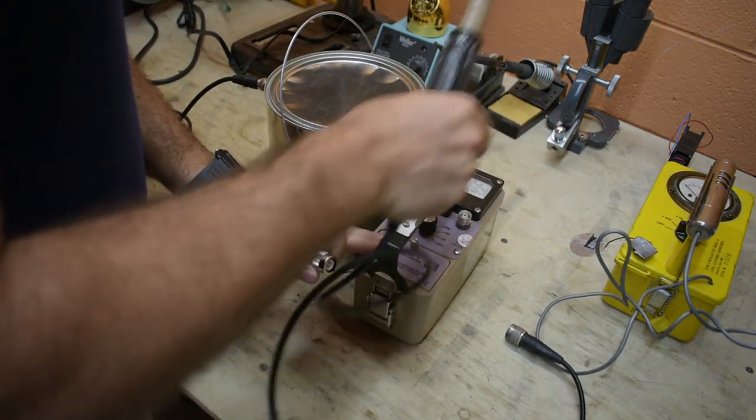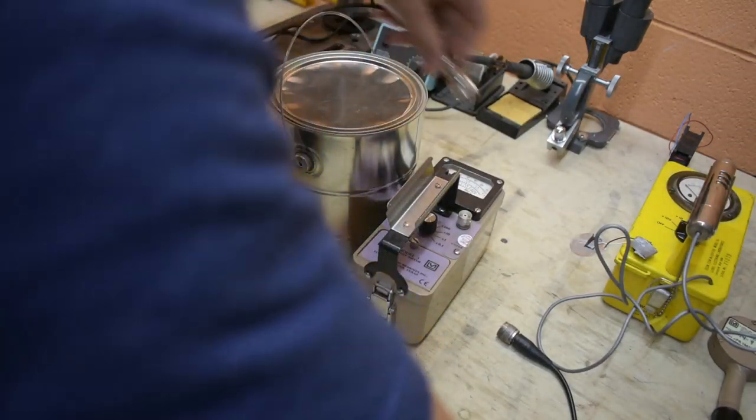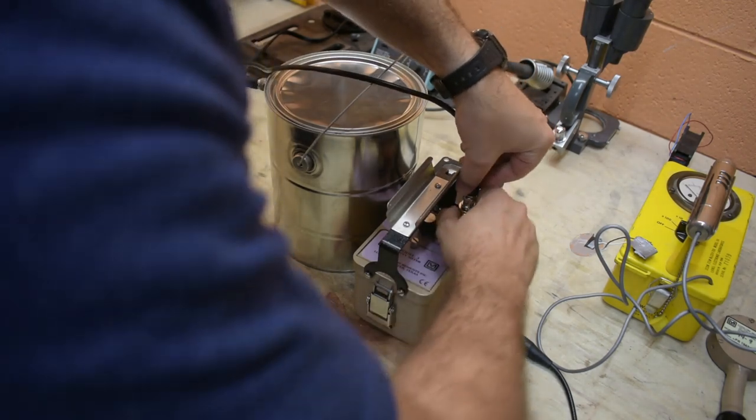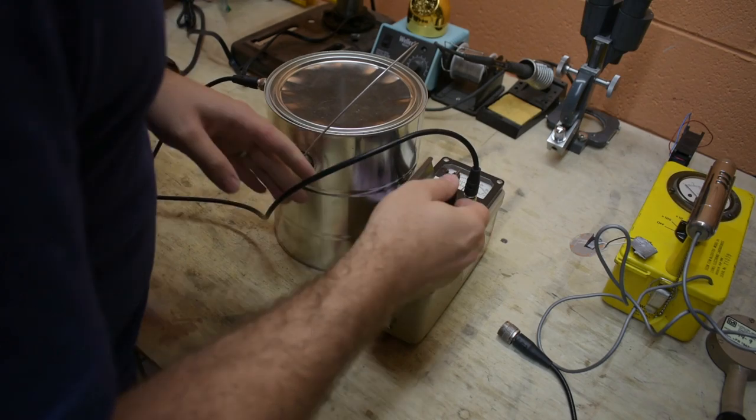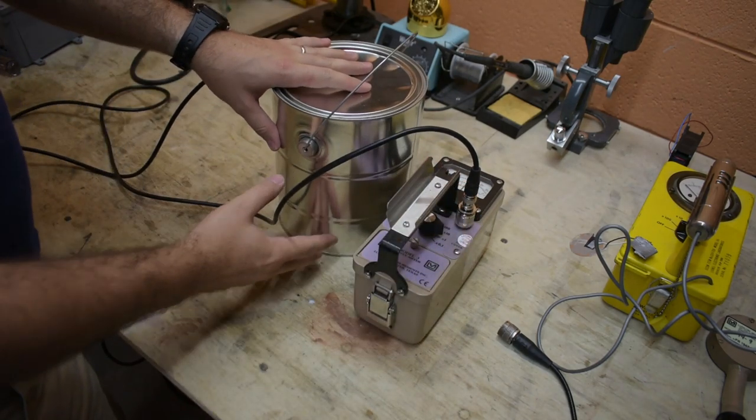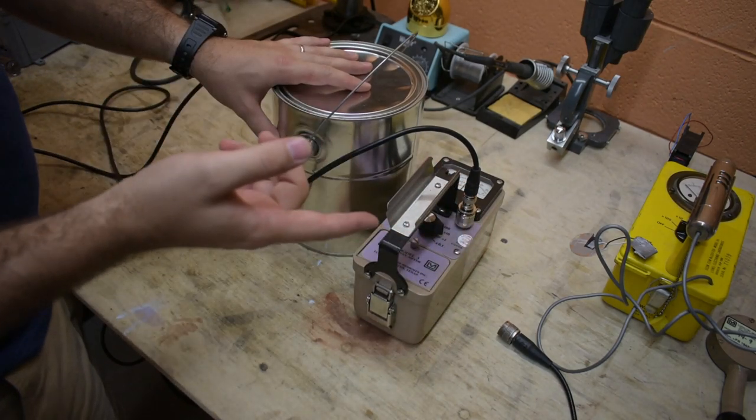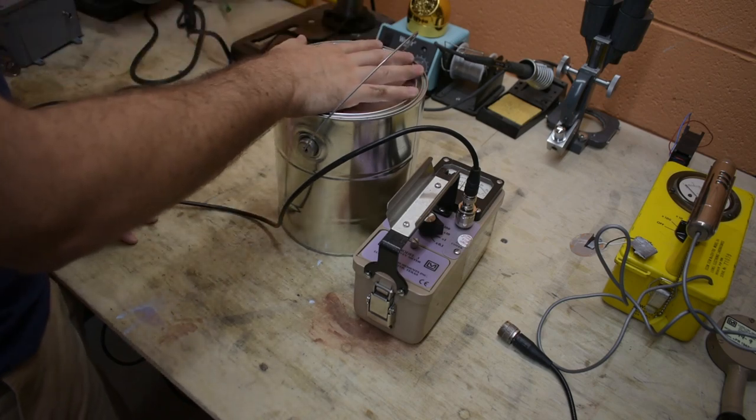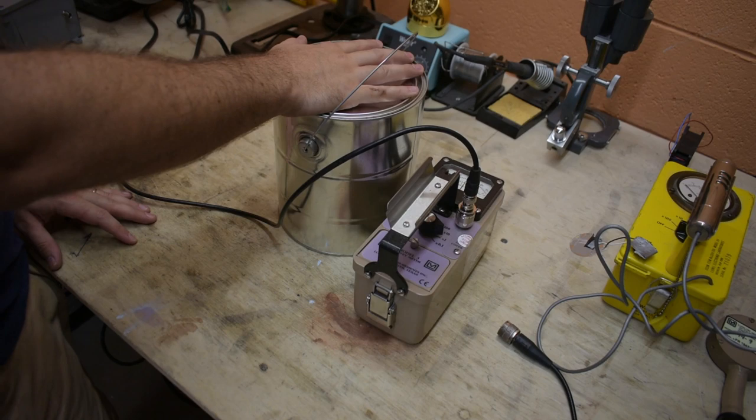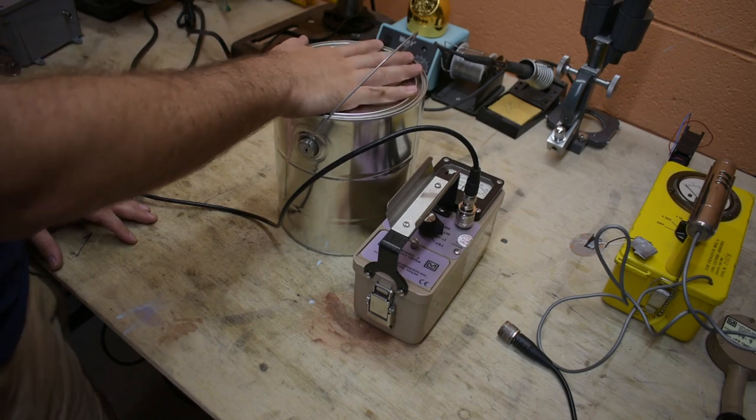I'm going to go ahead and connect that up here. And when I cut it on, you can immediately hear that it is clicking at a much higher rate than the Geiger tube was. And because it picks up so much more radiation per second, it's a lot more sensitive for detecting small levels of radiation.